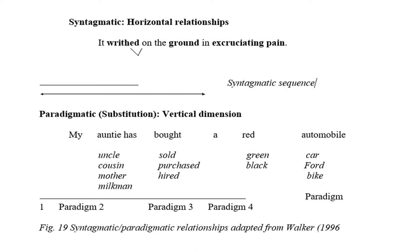There is also a paradigmatic or substitution — vertical dimension. For example: 'My auntie has bought a red automobile' and 'My uncle sold a green car.' We can say 'My auntie has sold a green car' or 'My uncle bought a red automobile.' We can move up or down, changing elements — but a verb must be replaced by a verb, and a noun must be replaced by another noun.